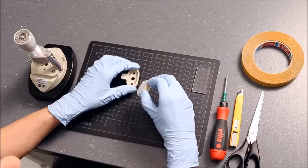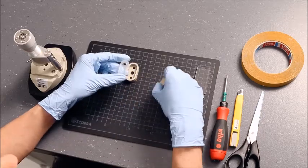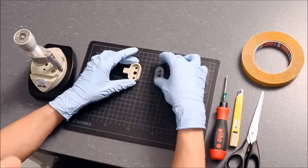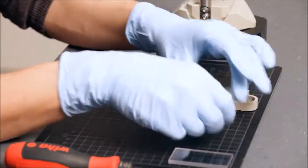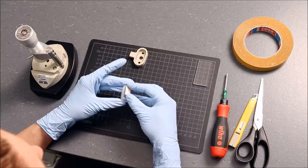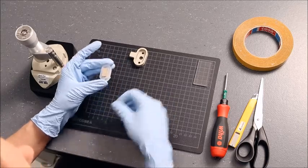If necessary, dry the gasket and the insert. Place the sample holder in the gasket of the insert for the clamping cell. Pull the sample holder into the gasket.